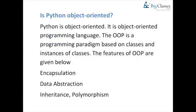Is Python object-oriented? Python is an object-oriented programming language. OOP is a programming paradigm based on classes and instances of classes. The features of OOP include Encapsulation, Data Abstraction, Inheritance, and Polymorphism.